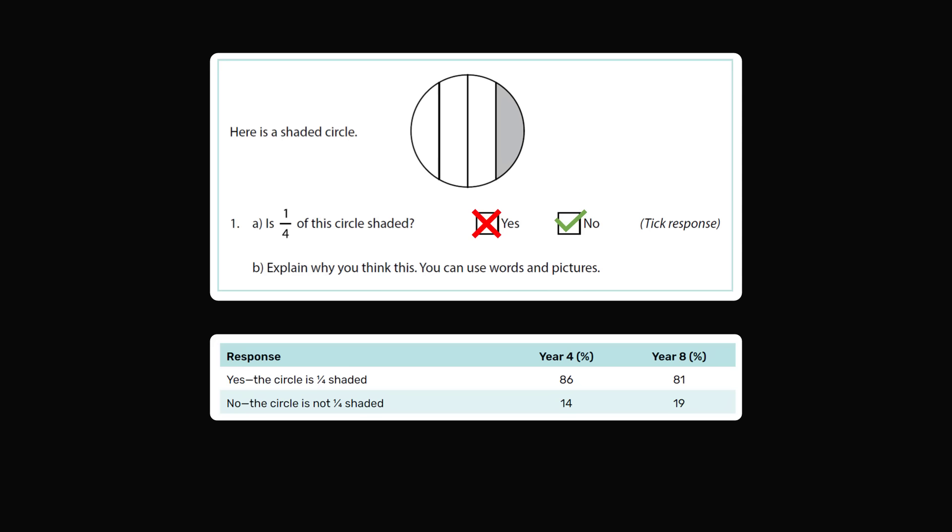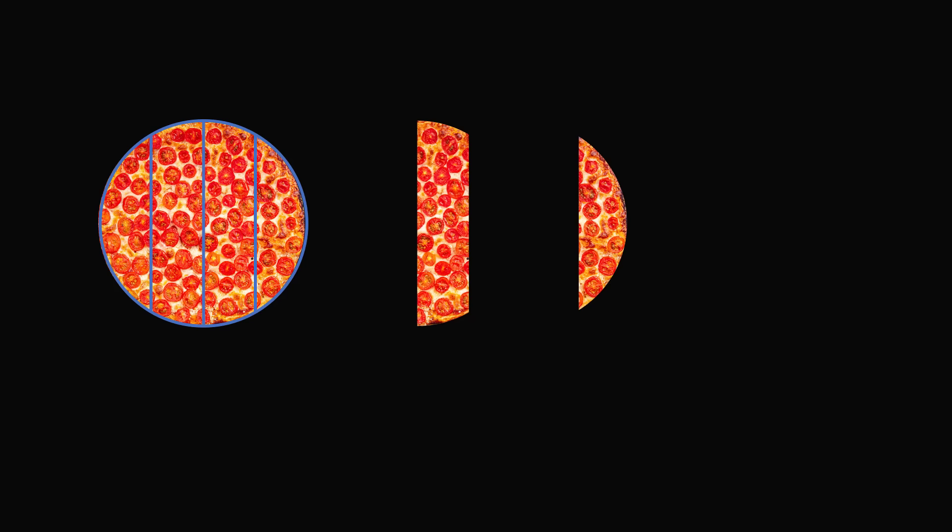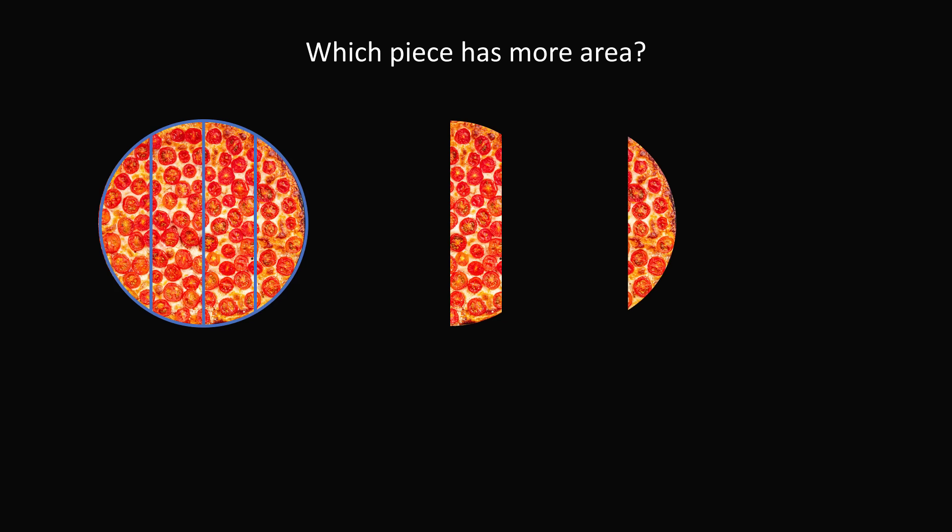So one thought that crossed our mind is whether changing this question to a different context would make a difference. Imagine you had a perfectly circular pizza and you slice it up in the same way that the circle was divided. Let's say you ask the students to compare the areas of these two slices. You could directly ask them, which piece has more area? I think almost every student would be able to identify the slice on the left is larger than the slice on the right.